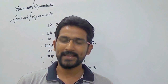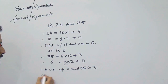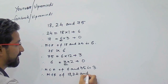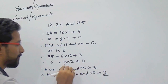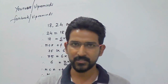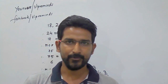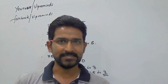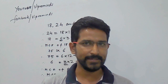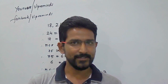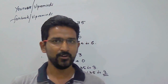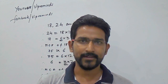And also, the HCF of all 3 numbers — therefore, HCF of 18, 24, and 75 is 3. This is how we calculate the HCF of 3 numbers: first calculate the HCF of any 2 numbers, then take that HCF and the remaining number and calculate their HCF. The final result is the HCF of all 3 numbers. This is how we apply Euclid's division algorithm.